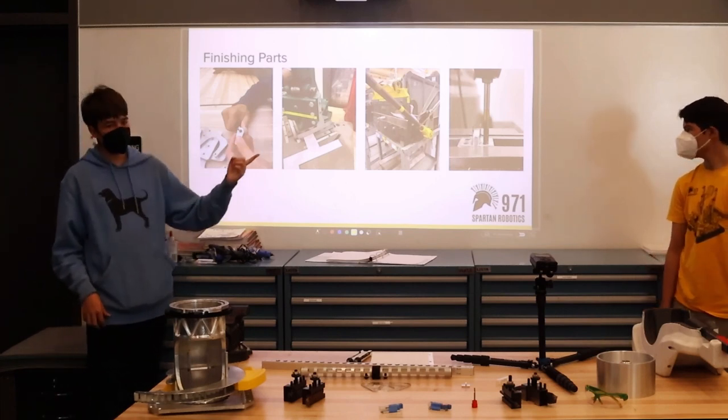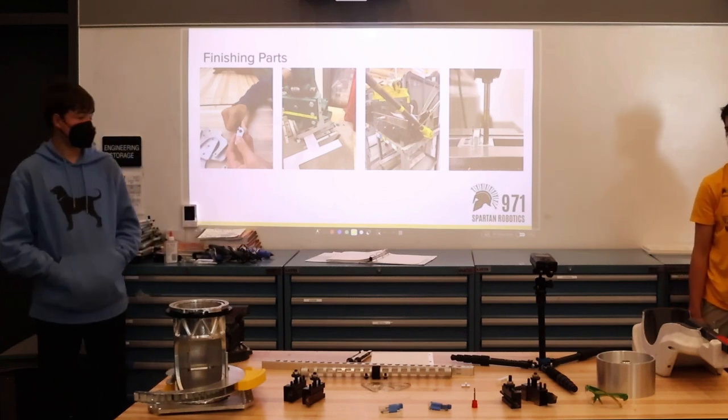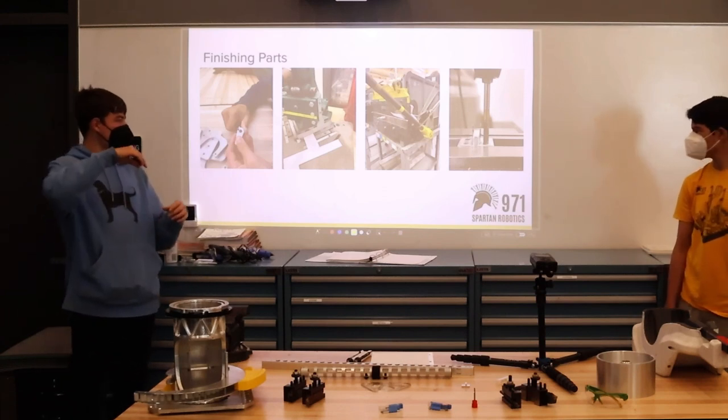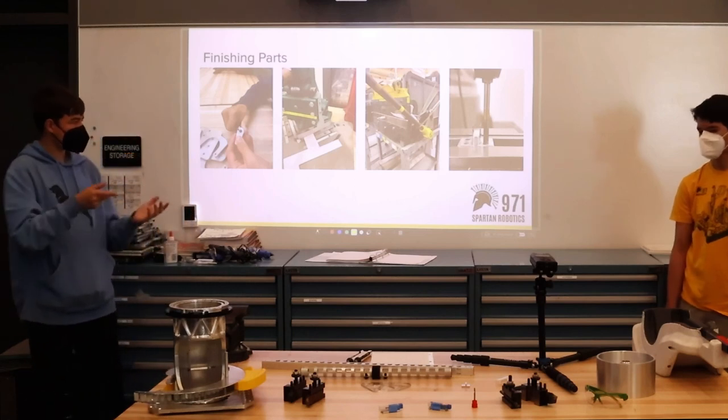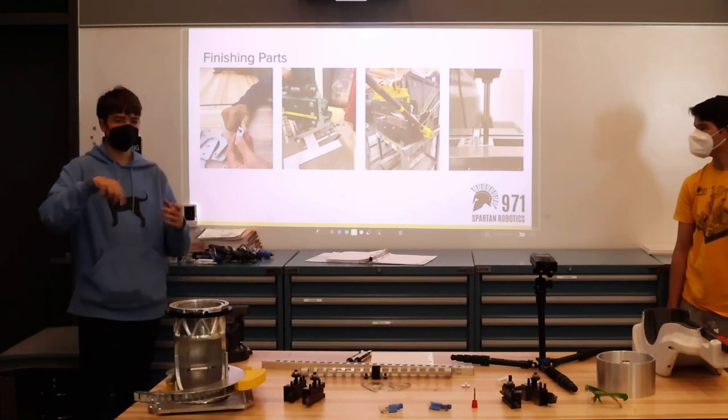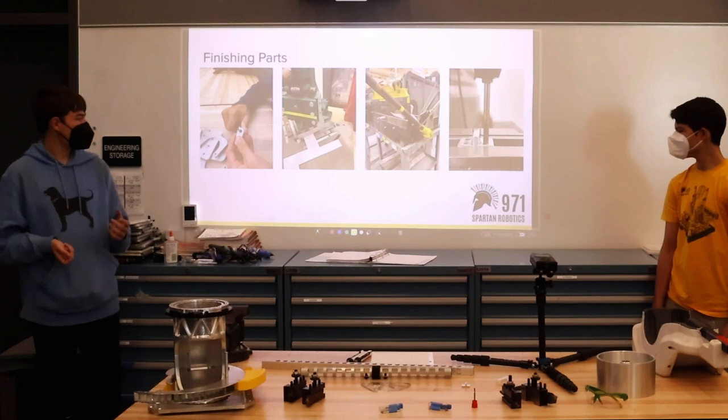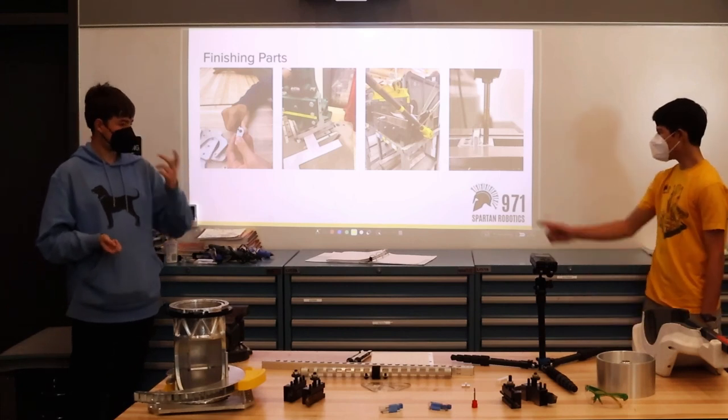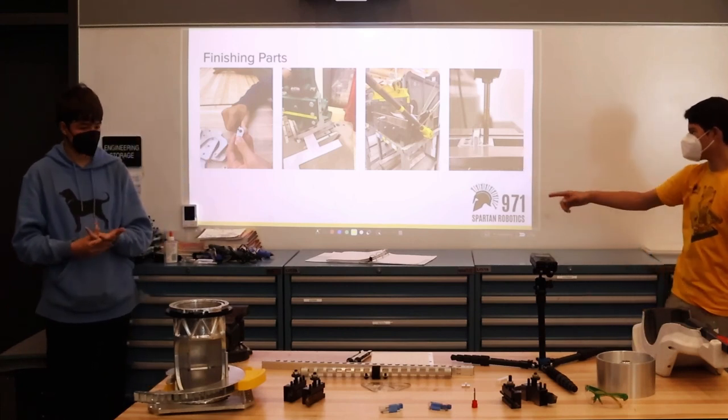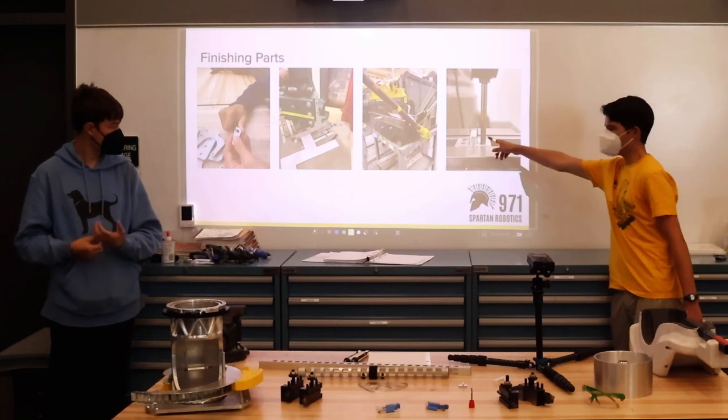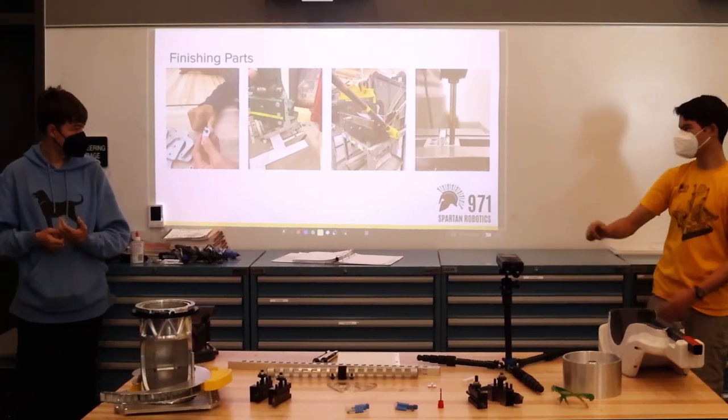And finally there's tapping. Most of the mill parts need to get tapped. A tap basically lets a bolt screw into something. It creates threads on the inside of metal. So yeah, there's that. This part is for one of our climbers, so you can see that there's a chain attached to it. So it collects the chain that goes around our climber.